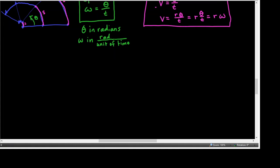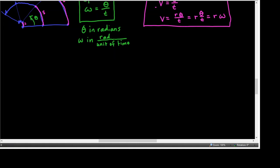Add these to your memorization list: angular speed omega equals theta over t, and linear speed v equals s over t, which also equals r times omega. The list of formulas is getting long, and we're still in the first section — there's a lot of material in this first unit.